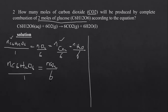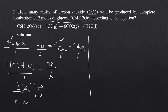Substituting, since they gave us 2 moles of glucose: 2 over 1 equals number of moles of CO2 over 6. Cross-multiplying: number of moles of CO2 equals 2 times 6, which gives us 12. So the answer is 12 moles of carbon dioxide.